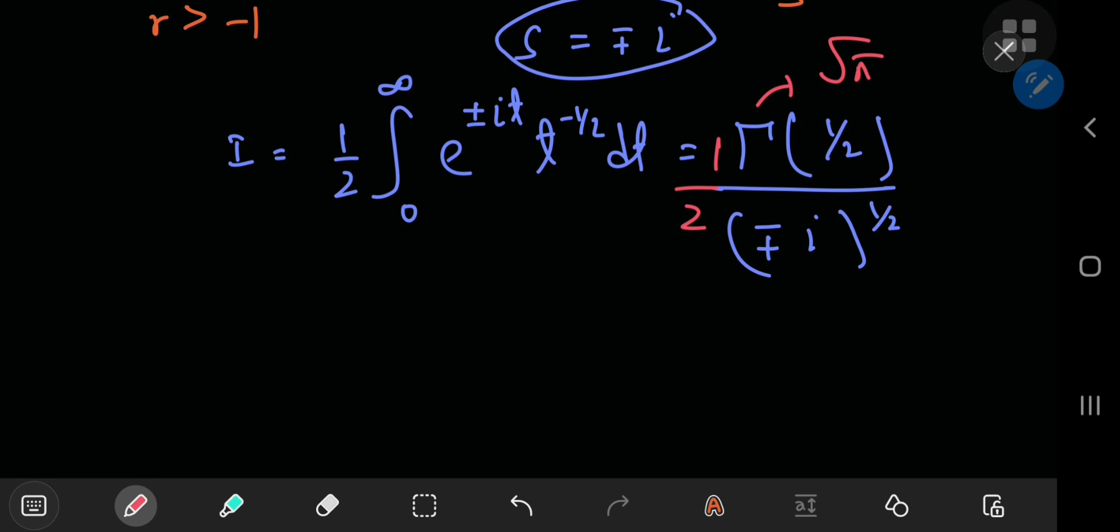So we now know that the integral equals the square root of pi by 2 times 1 by negative positive i to the 1 by 2. And taking care of this imaginary term,